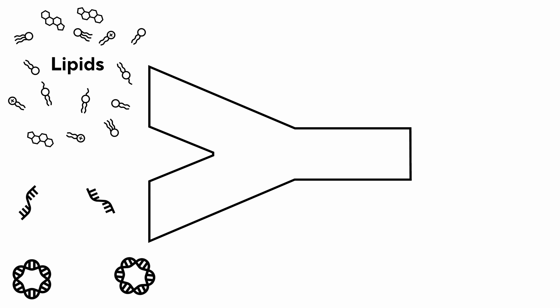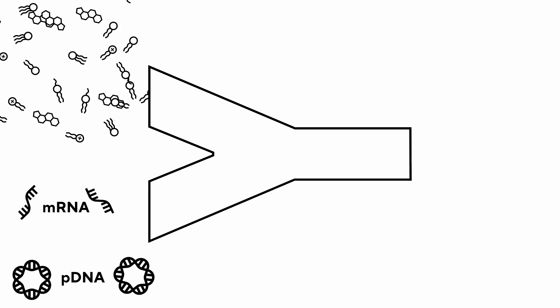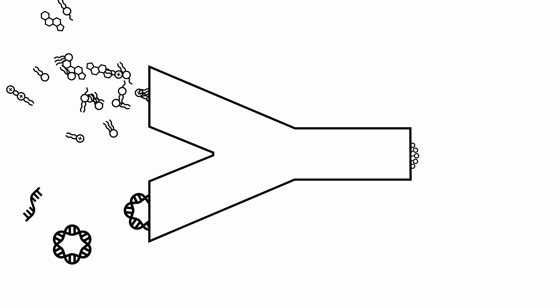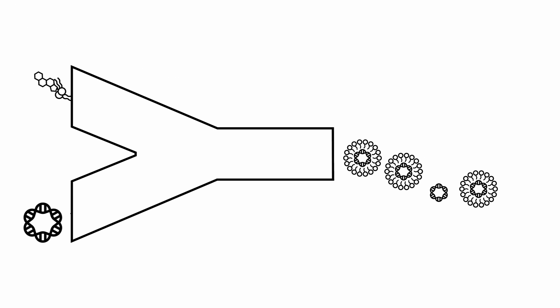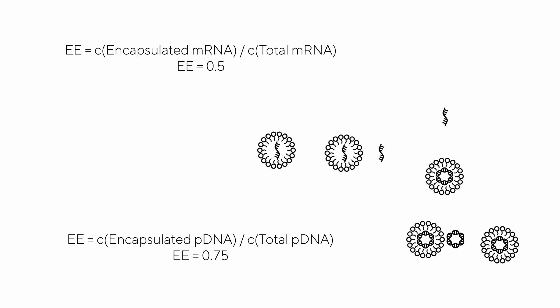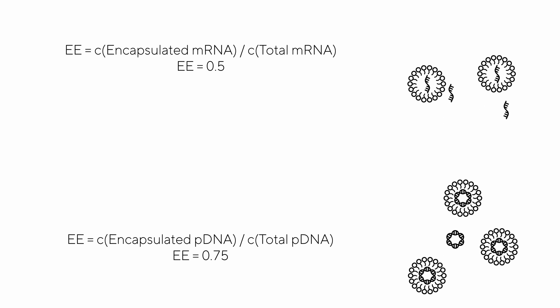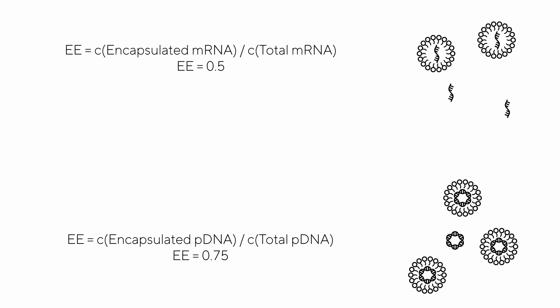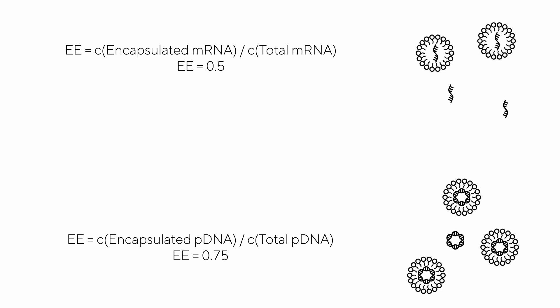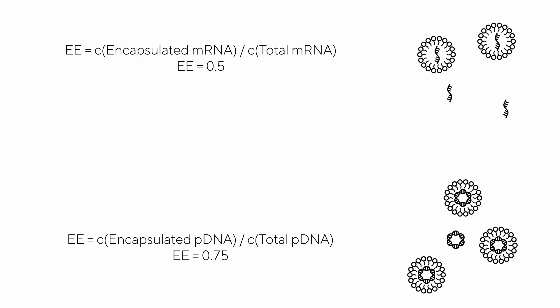When LMPs are used to co-encapsulate two different nucleic acids, the ribo-green assay may not be sufficient for characterization purposes, as the encapsulation efficiency of the two nucleic acids may vary. An LMP co-encapsulating mRNA and pDNA in a 1-to-1 mass ratio was prepared. When analyzed on the Patpix LMP switcher, the following chromatogram was obtained.